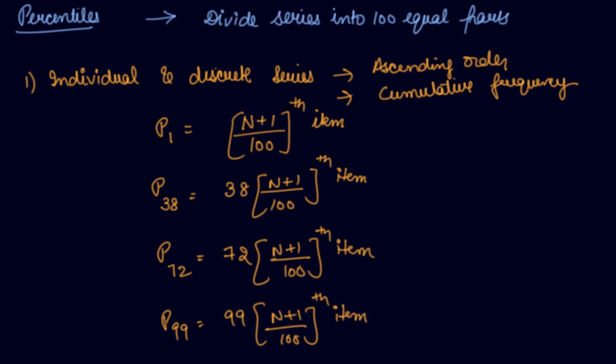In the case of individual series, the item you get is the percentile value. In the case of discrete series, you find the cumulative frequency, and the corresponding size in the cumulative frequency table will be the percentile.